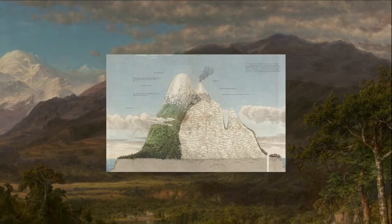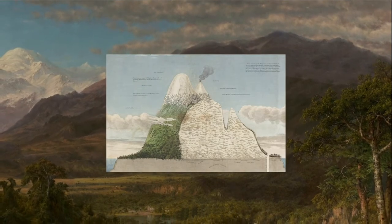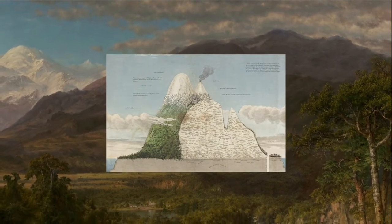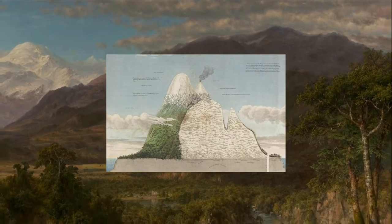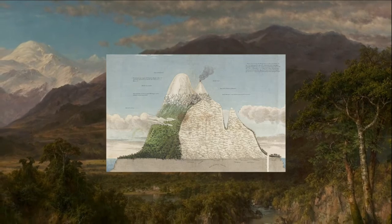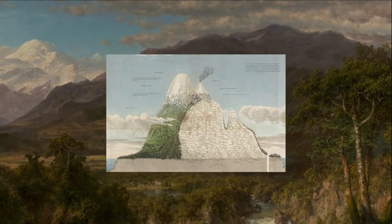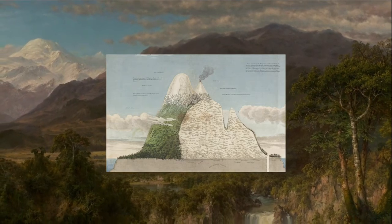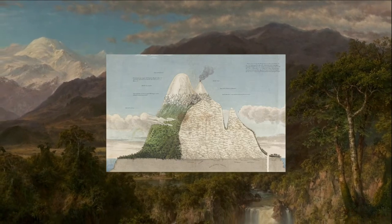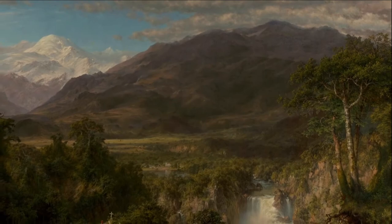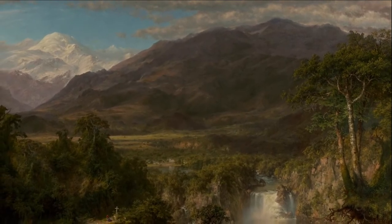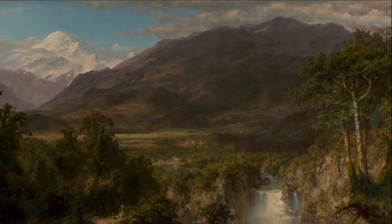Humboldt filled the Naturgamalda with data relating plants to their environments that he recorded in South America. Church used the Naturgamalda as a template for this painting, conveying a similar wealth of visual detail.